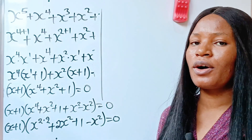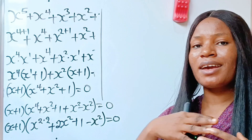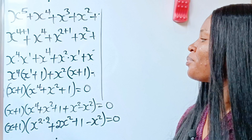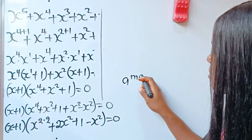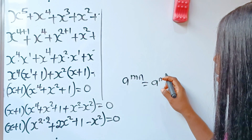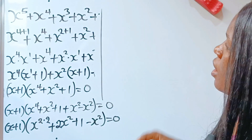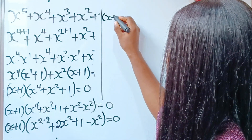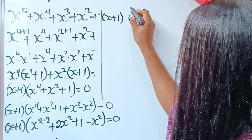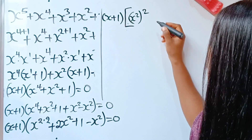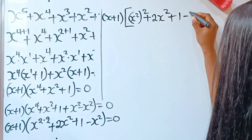If this is the first time you're coming across this channel, please click on the subscription button and your notification bell so that you'll be notified any time I upload a new video. So, we go ahead to solve. Note that a to the power of m times n is equal to a to the power of m raised to the power of n. So, we are going to express that in this form. If we do that, we have x plus 1 multiplied by x squared raised to the power of 2.